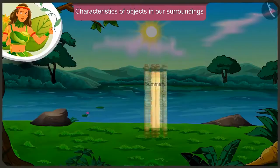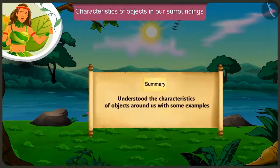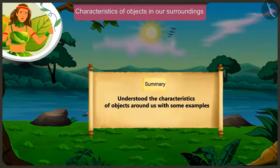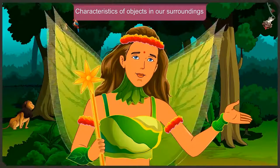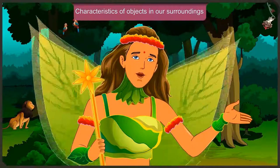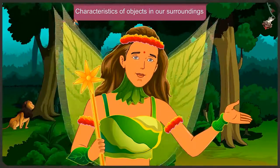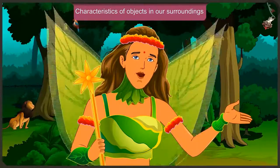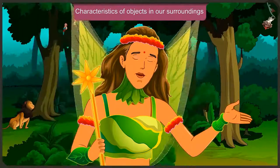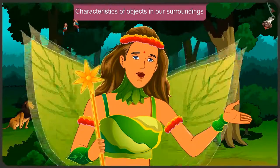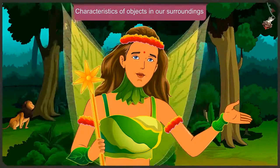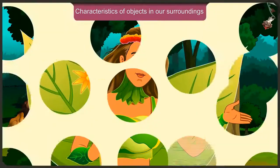Today we understood the characteristics of objects around us with some examples. In the next video, we will see the mistakes we make while understanding the characteristics of the objects around us.